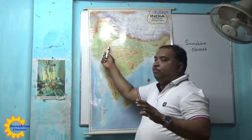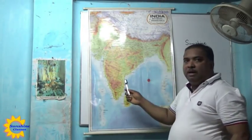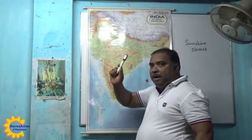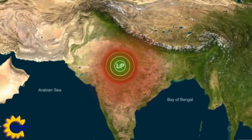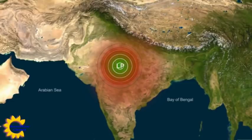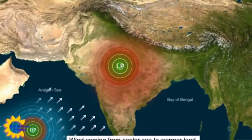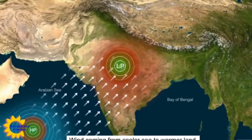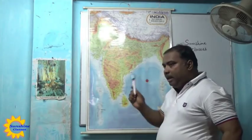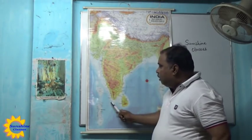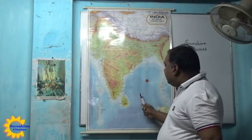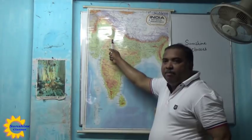An area of low pressure is created in the northwestern part of India. During summer, from April, May, and June, there is an area of low pressure, but the ocean water is at a relatively high pressure zone. Due to the pressure gradient between the ocean and the land, air will flow from the ocean to the landmass. So from June, air starts rotating from the Indian Ocean via the Arabian Sea and the Bay of Bengal towards the highly heated landmass of northern India.